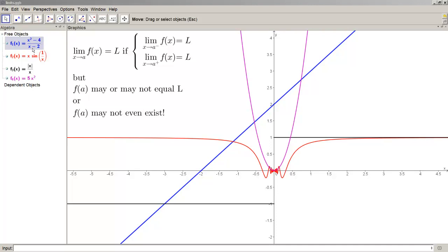We've got x squared minus 4 over x minus 2, we've got x times sine 1 over x, we've got the absolute value of x over x, and then we've got 5x squared.